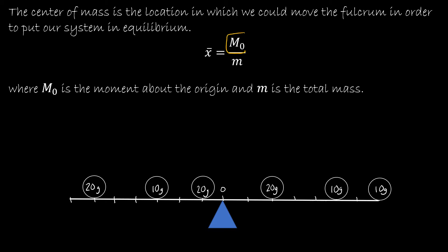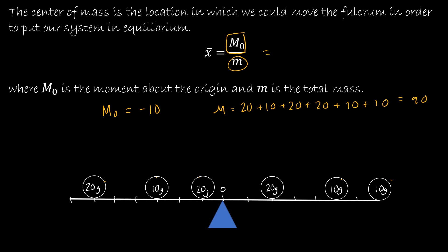So m-sub-0 is our moment, which we just computed as -10. And m is just the total mass: 20 + 10 + 20 + 20 + 10 + 10, which gives me 90. So the center of mass is -10 over 90, or -1/9. That tells me my fulcrum is very close to where it needs to be, but it needs to be at -1/9, which is just slightly to the left. If I shift it over just a little bit, my system would be in equilibrium.